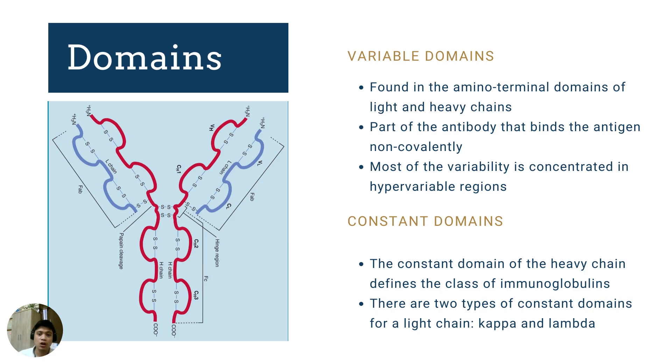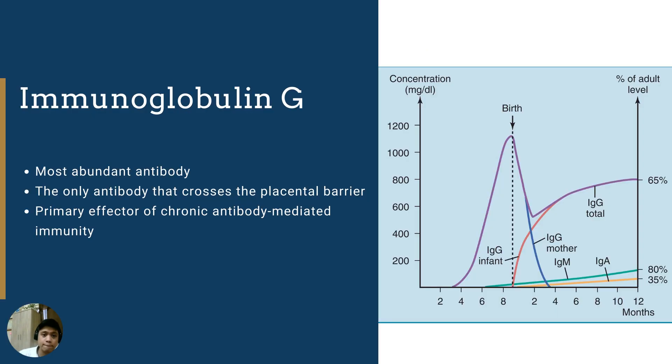The constant domains of the heavy chain defines the class of the immunoglobulin. As you will observe in the image, the central shaft of the antibody, the middle structure, is composed entirely of the heavy chain marked red. And this constant domain of the heavy chain will be able to tell us what kind of immunoglobulin this antibody is. There are two types of constant domains for a light chain, and that is kappa and lambda.